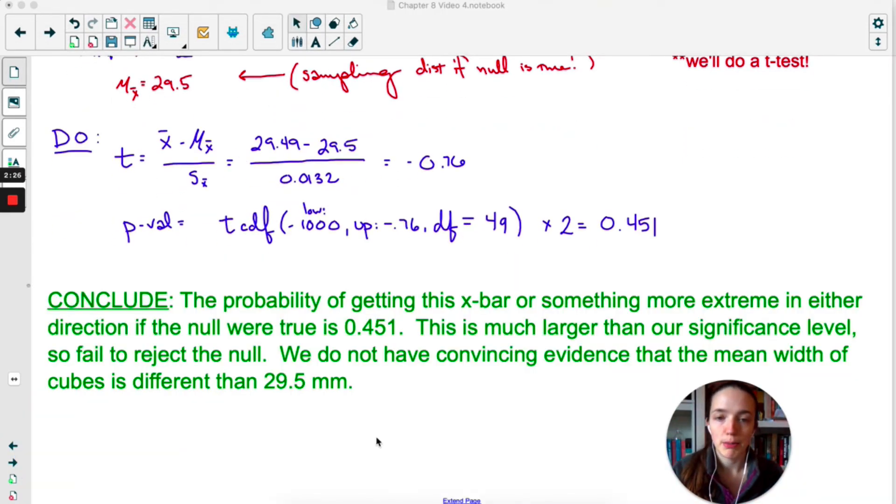Now for the conclusion, the probability of getting this x-bar or something more extreme in either direction, that's important, if the null were true, also important, is 0.451. This is much larger than our significance level, so we fail to reject the null. We do not have convincing evidence that the mean width of cubes is different than 29.5.